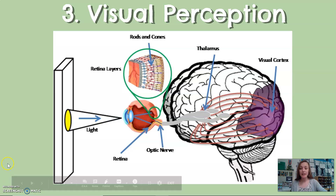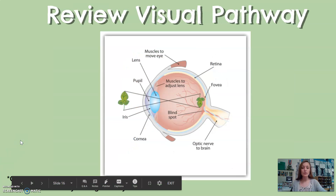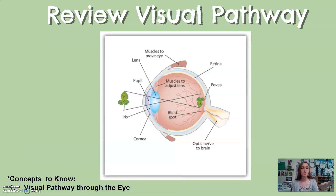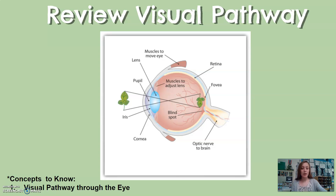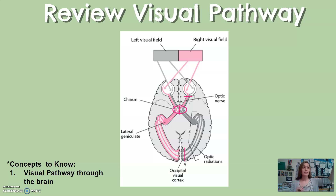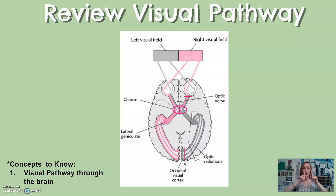This is also review — taking light into the eye, the sensation part, where light information is being picked up. The image in the environment is refracted upside down onto the back of the eye, and this information will be processed in the brain as right side up. What is seen in the right visual field is processed in the left occipital lobe, and the left visual field is processed in the right occipital lobe.